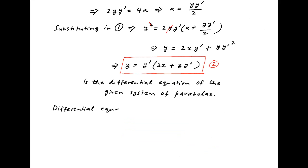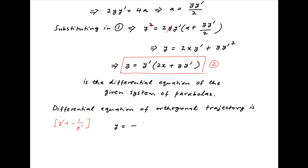The differential equation of the orthogonal trajectory is obtained by replacing y' in the above differential equation with −1/y'. Therefore, the differential equation of the orthogonal trajectory is y = (−1/y')·(2x − y/y').